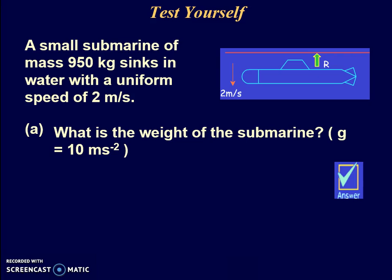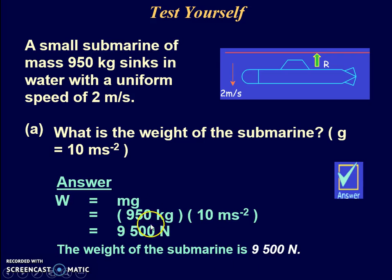Try this question: A small submarine of mass 950 kg sinks in water with a uniform speed of 2 m/s. What is the weight of the submarine? To find the weight, use the formula W = mg. Make sure everything is in SI units, and you'll be able to find the weight in Newtons.